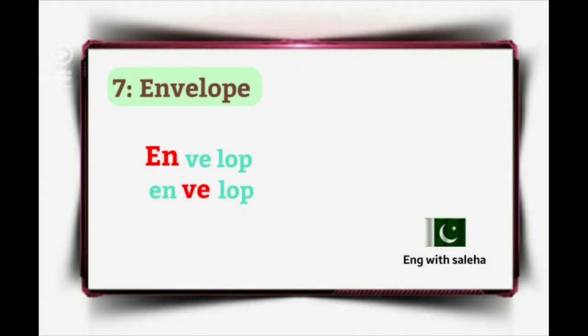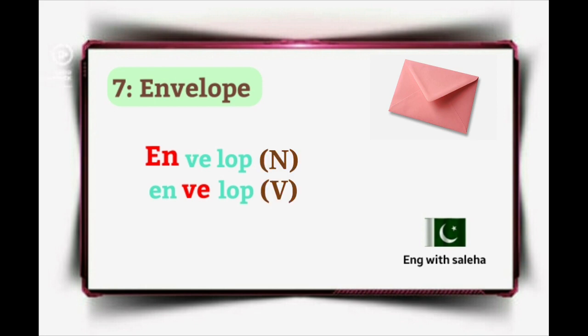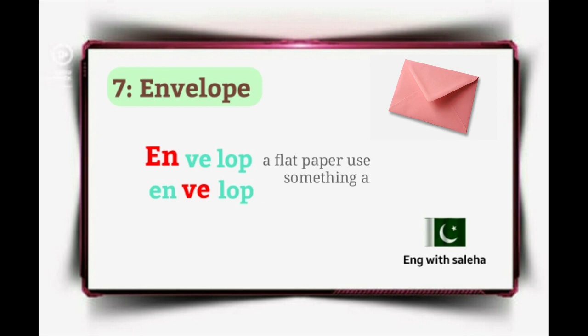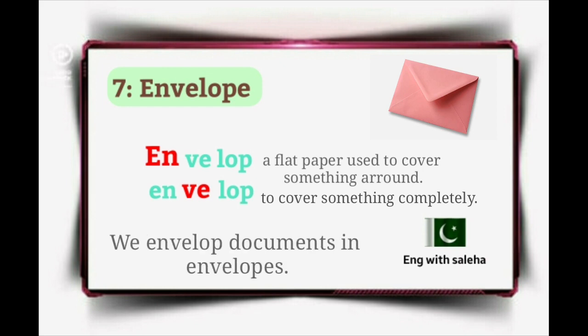Number 7: Envelope. When used as a noun, it's 'envelope' — stress on the first part. When used as a verb, it's 'envelop' — stress on the second part. 'Envelope' is a flat paper used to cover something, and 'envelop' means to cover something completely. Example sentence: We envelop documents in envelopes.